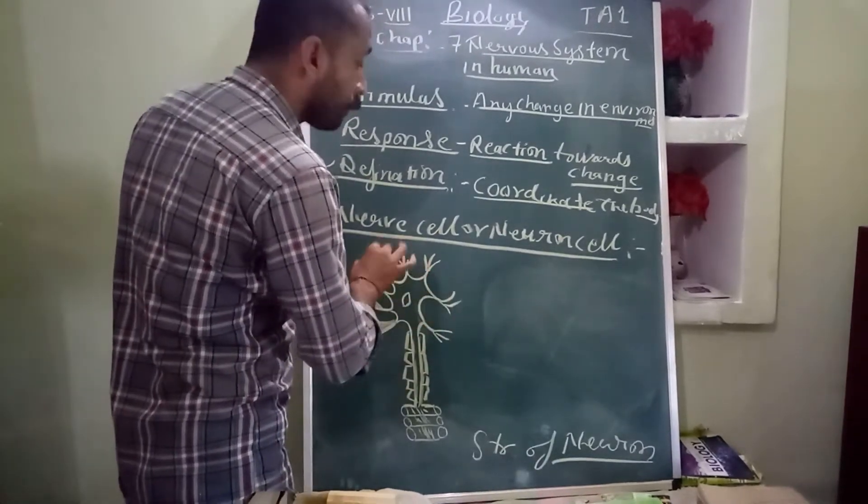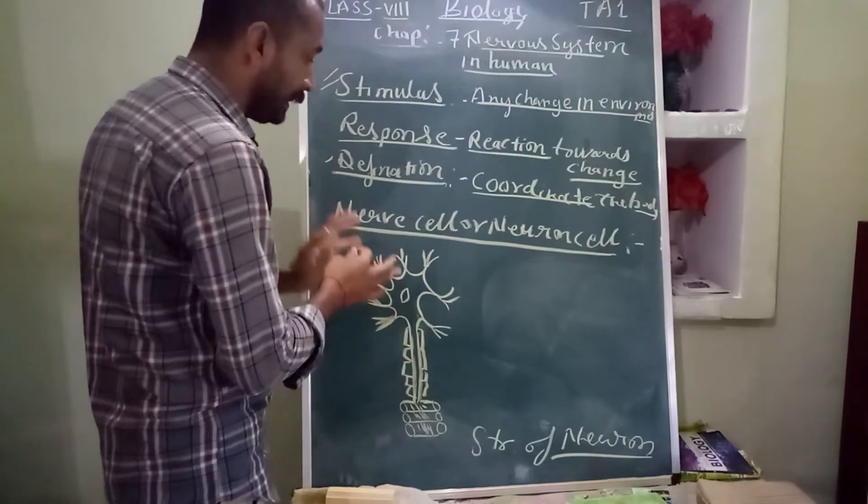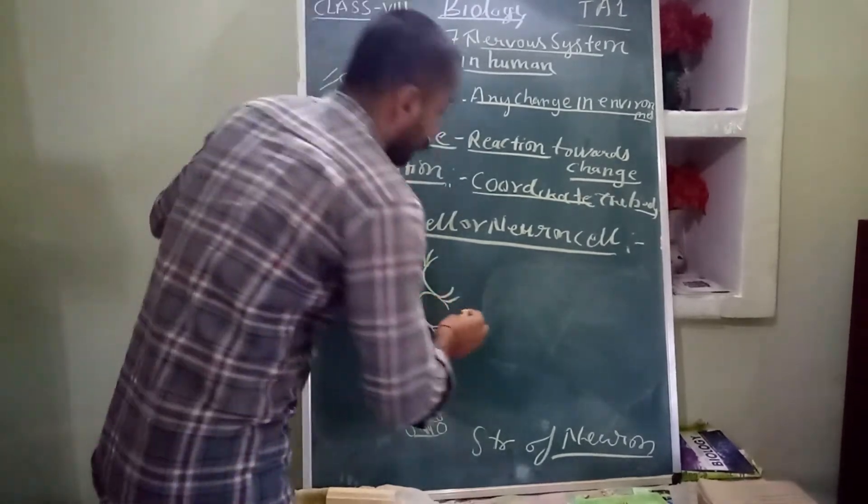We discuss about the structure of nerve or neuron cell. So basically in neuron or nerve cells, three main parts.